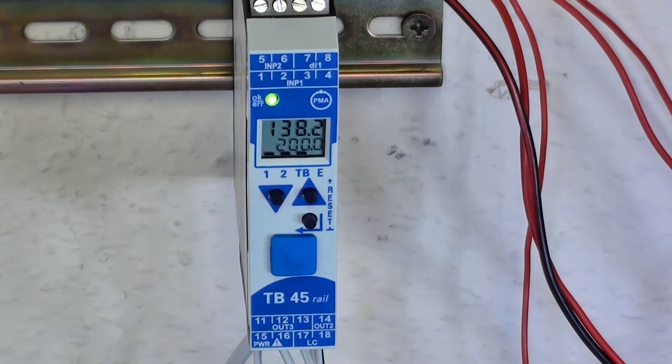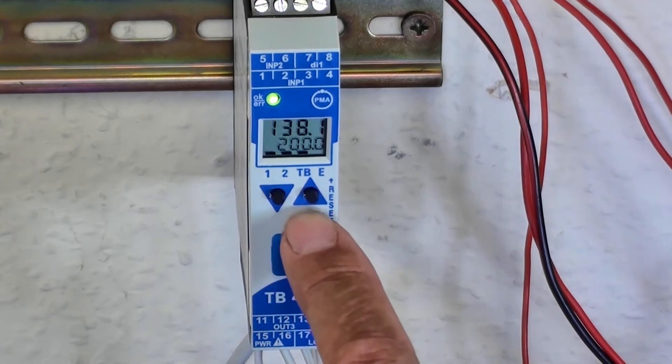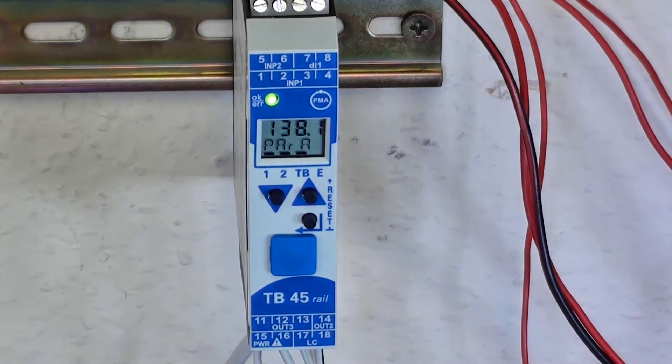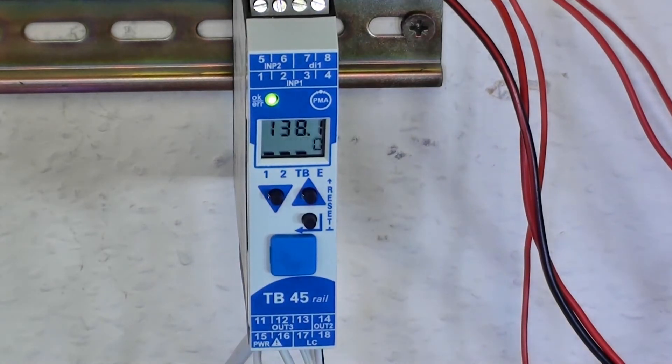To configure TB45 with the pushbuttons, press the Enter key and hold for 3 seconds. You'll now see PARA, this is the parameter level, so press the Enter key again and it will ask for a password.